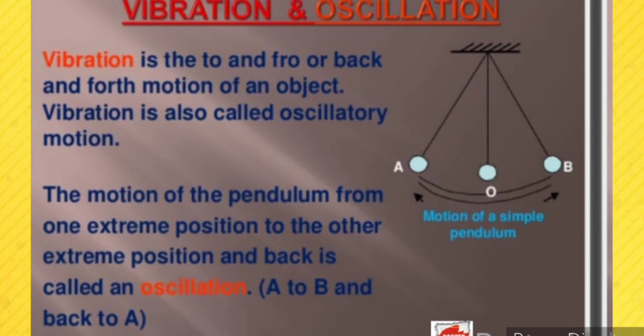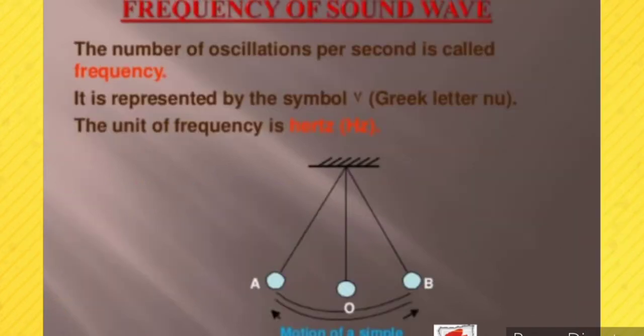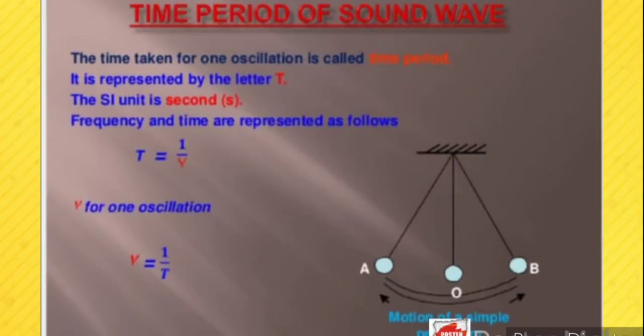The number of oscillations per second is called frequency. It is represented by the Greek letter nu (ν) and the unit of frequency is hertz. The time taken for one oscillation is called the time period, represented by the letter T, and the SI unit is seconds. The relationship between them is: T = 1/ν and ν = 1/T.